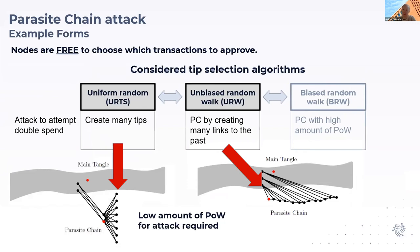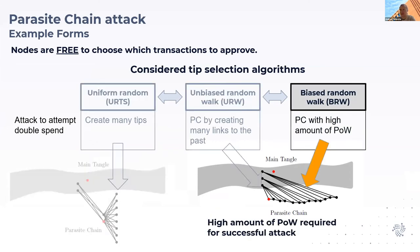This can happen for all three tip selections. In the uniform random one, you just create many tips. In the unbiased random walk, you create many links to the past. So they're not very resilient to this type of attack.